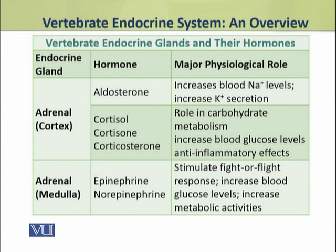We are discussing the major hormones of the adrenal gland. The adrenal cortex produces two major types of hormones: mineralocorticoids and glucocorticoids. These are the three hormone types produced from the adrenal cortex. The adrenal medulla produces two important hormones: epinephrine and norepinephrine, which are collectively called catecholamines.